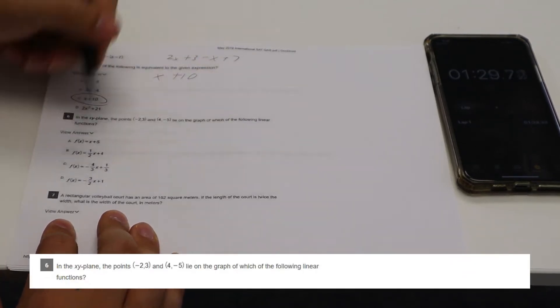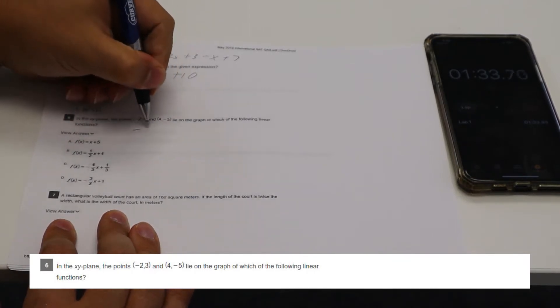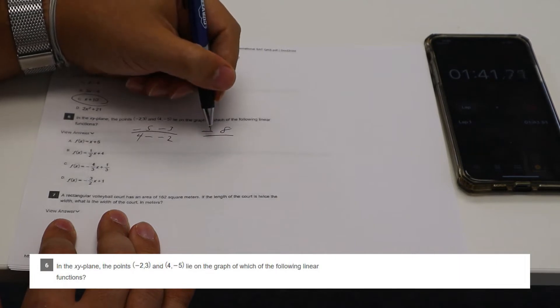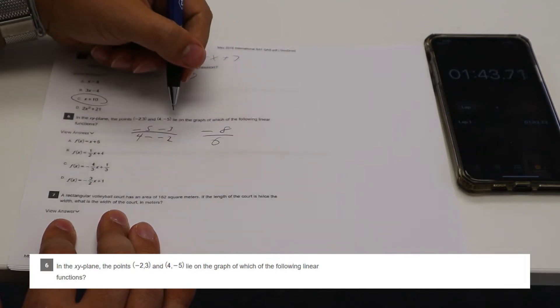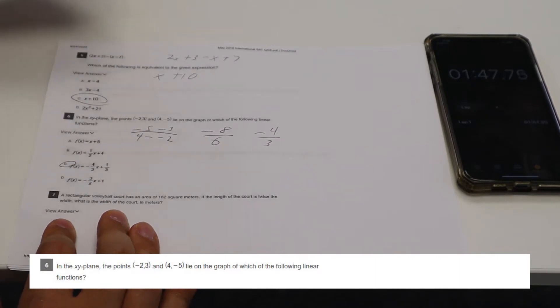Okay. Which is the linear function. So if I just do the slope, I should have this. So Y2 minus Y1 over X2 minus X1 negative eight over six. So that would be negative four over three. So that's going to be C.